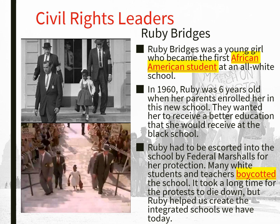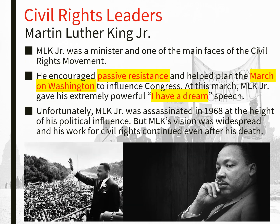Probably the best-known leader of the civil rights movement is Dr. Martin Luther King Jr. He was a minister and one of the main faces of the civil rights movement. He encouraged passive resistance — protesting without violence. He helped plan the March on Washington to influence Congress, and at that march he gave his very famous and powerful 'I Have a Dream' speech. Unfortunately, Martin Luther King Jr. was assassinated in 1968 at the height of his political influence, but his work for civil rights continued even after his death.